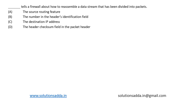This is a question from computer networks. What tells a firewall about how to reassemble a data stream that has been divided into packets? The options are: the source routing feature, the number in the header's identification field, the destination IP address, or the header checksum field in the packet header.